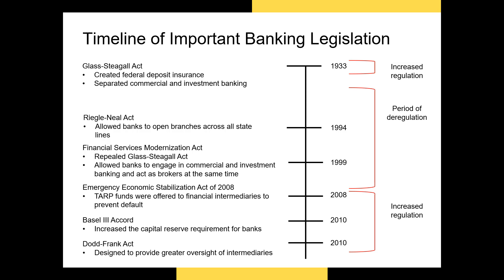As the value of mortgage-backed securities on their balance sheets fell, several financial intermediaries were faced with default. In March of 2008, Bear Stearns, a large investment bank, was bailed out by the U.S. federal government. Then in September of 2008, Lehman Brothers, another investment bank, was allowed to declare bankruptcy, triggering the 2008 financial crisis. Because of falling share prices, high probability of default by banks, and an unwillingness of many banks to lend to one another, the U.S. federal government passed the Emergency Economic Stabilization Act in 2008.